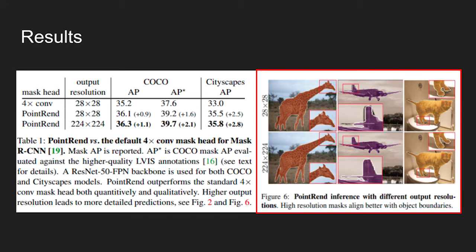On the right are the visual results. PointRend in general outputs better segmentation quality. As shown in the figure, higher output resolution aligns mask outputs better with object boundaries.